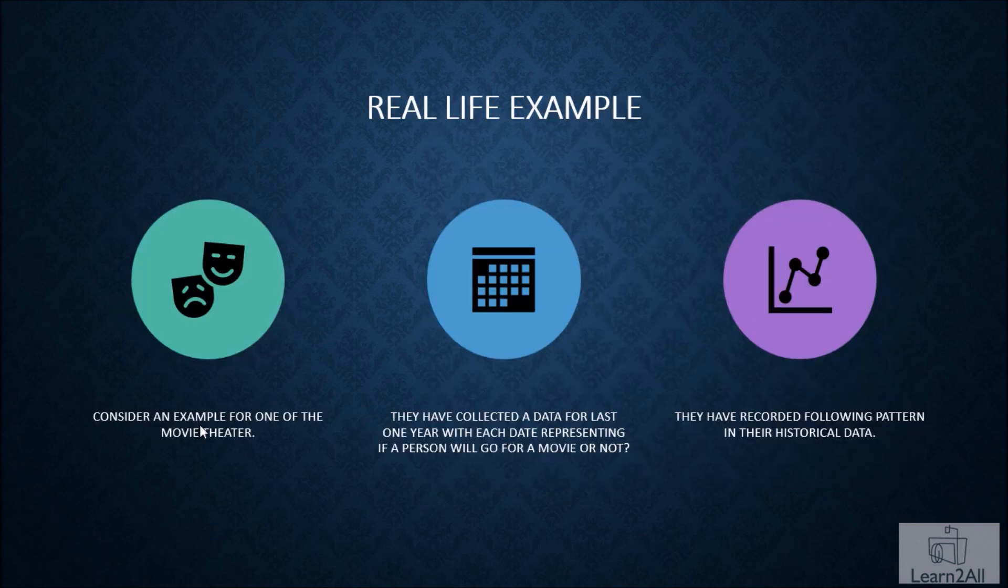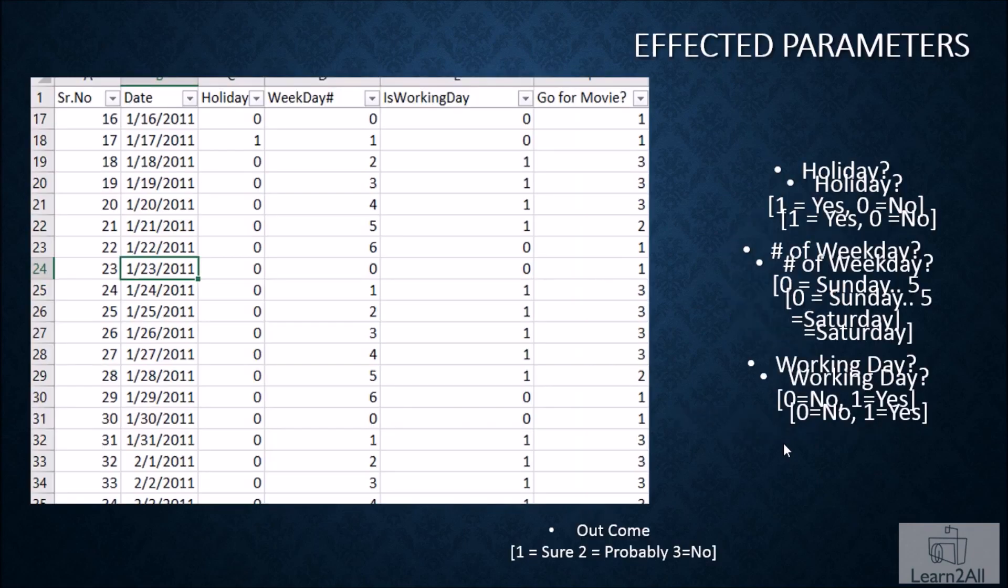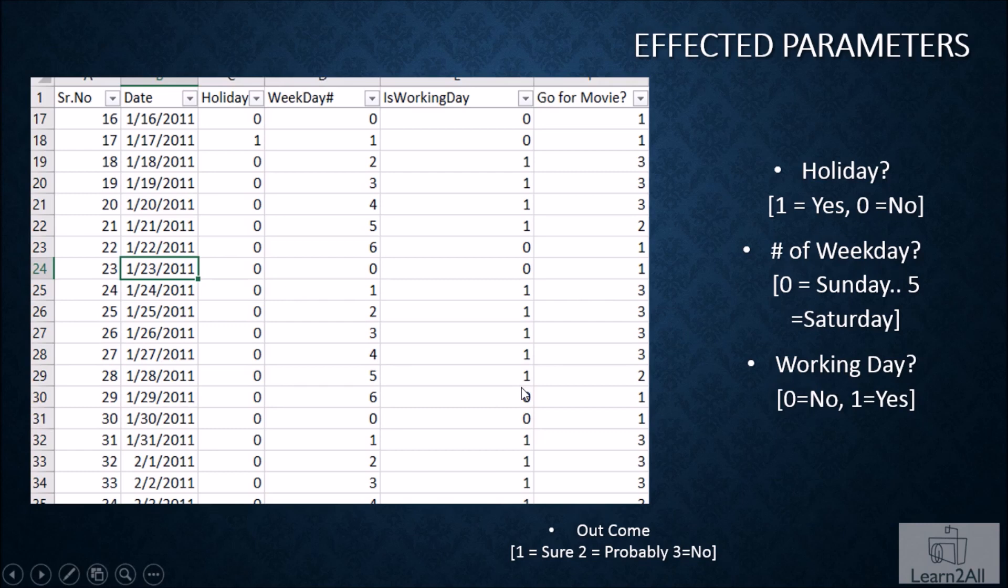Let me explain you a real-life business case where this prediction model can be useful. Consider an example for one of the movie theaters in the city. They have collected data for the last one year with each date representing if a person will go for a movie or not. They have recorded the following pattern for the historical data. In this example, this is the raw data for the theater that they were capturing. You can see here, they have captured each individual date throughout the year.